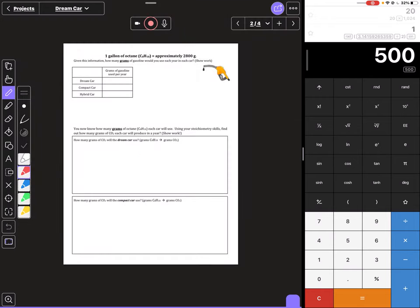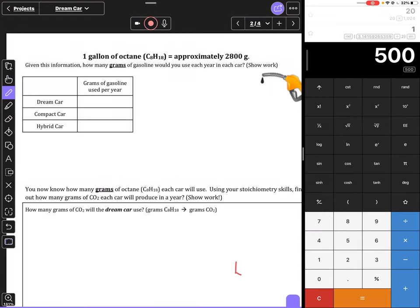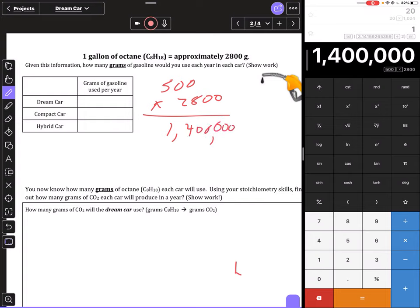Once you get your gallons used, your units need to be in grams. One gallon of octane is approximately 2,800 grams, so calculate how many grams of gasoline you'd use. I calculated 500 gallons, so I would take 500 and to convert that to grams I multiply by 2,800. That gives me 1,400,000 grams - that's what goes here for my hypothetical dream car.